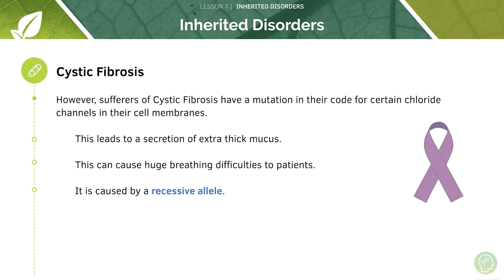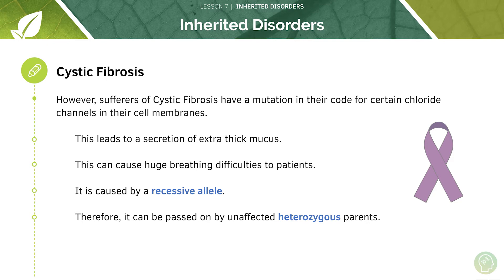Cystic fibrosis is caused by a recessive allele, which means that two alleles for cystic fibrosis must be inherited from mum and dad, and therefore it can be passed on by unaffected heterozygous parents. If we use big H and small h - if they have cystic fibrosis they've got to have two recessive alleles present, but if parents are heterozygous they have one dominant allele and one recessive allele.